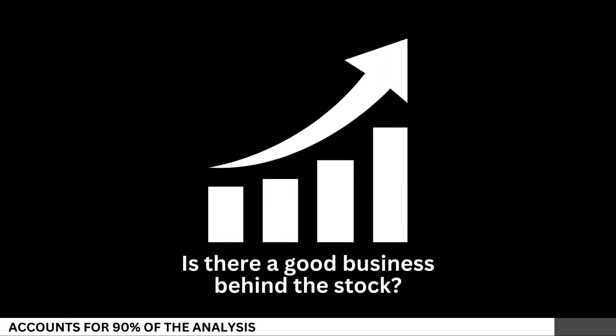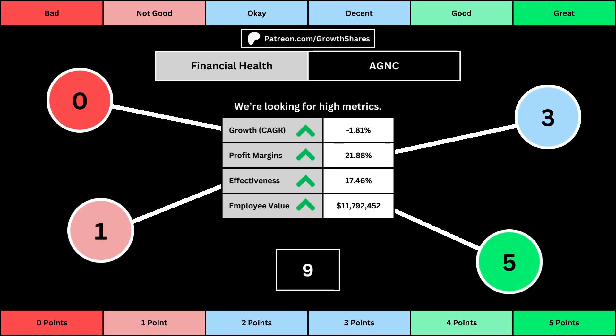We'll look at 14 metrics to determine the business fundamentals. The first set of metrics deal with the company's financial health, with its projected earnings growth for the next five years, its profit margins, its effectiveness — which looks at the company's returns on equity, assets, and invested capital — and then the employee value, which looks at how much value the average employee adds to the business. You can see the values for each of these metrics, as well as the point totals awarded in the bubbles.